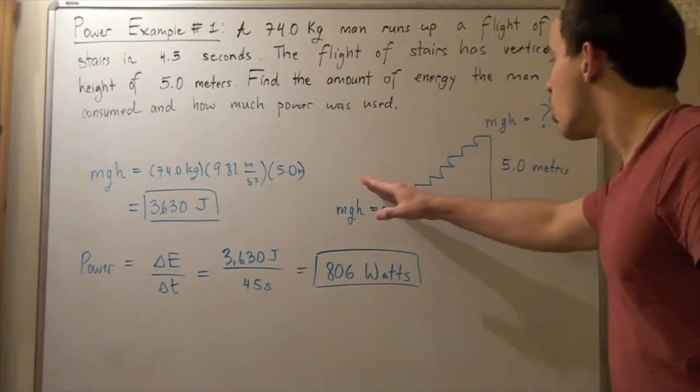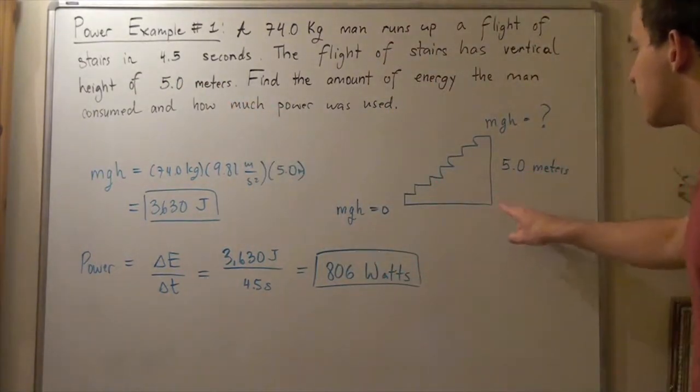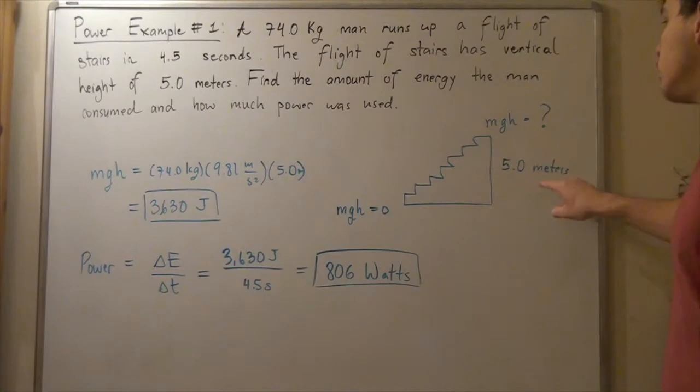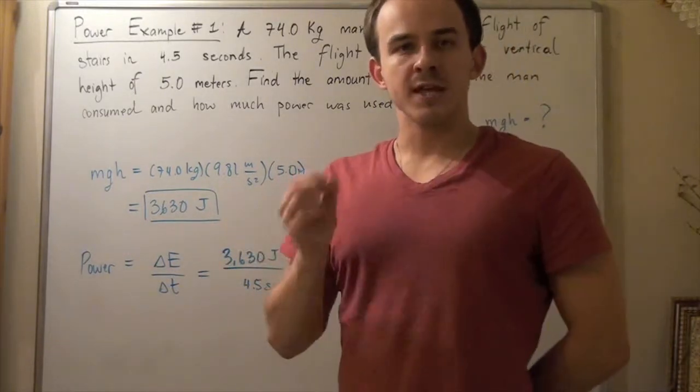Our person then runs up the stairs in 4.5 seconds and the vertical height is 5.0 meters. We want to find what the final gravitational potential of our person is.